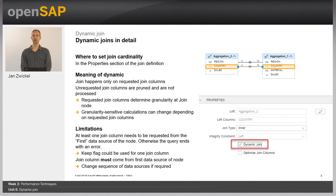Here are more details about the dynamic join setting. Where do you set it? First of all, you set it in the join properties. You click on a join connection and you get this flag. A prerequisite is that you have multiple join conditions defined, so you have multiple lines here.